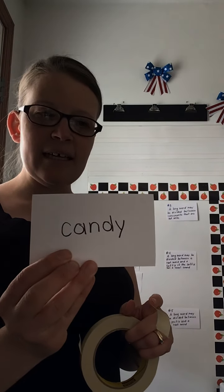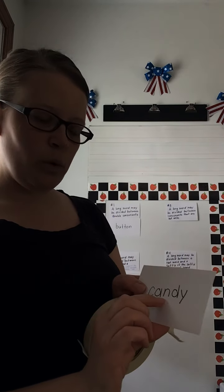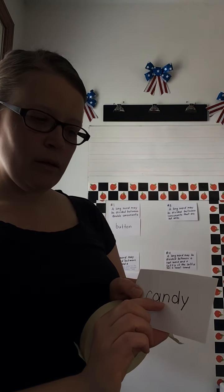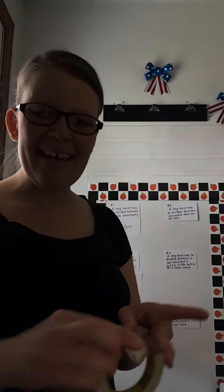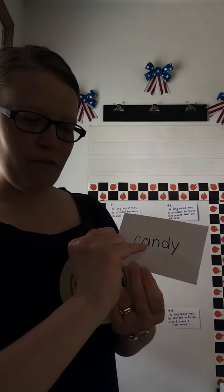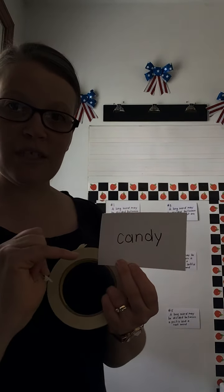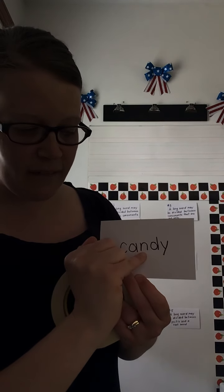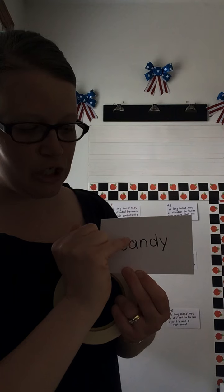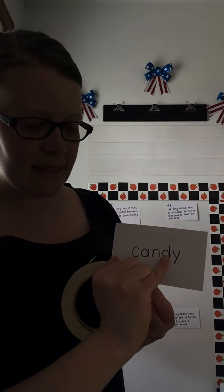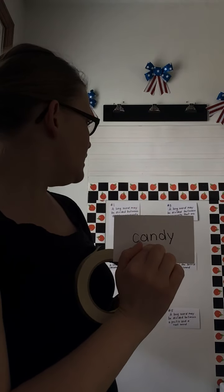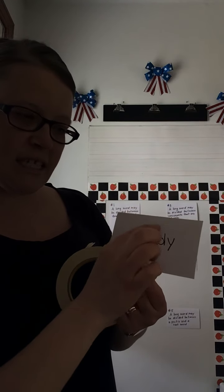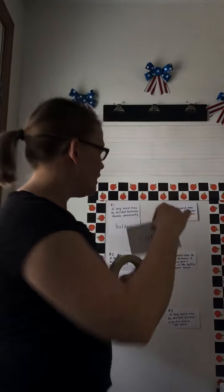The next word is 'candy.' Where does this one go? We would divide it between the two consonants — I misspoke earlier. It's actually important that you do not divide between the vowel and the consonant, because then the A would be long and it would be 'cā-ndy.' So we want to divide it between the two consonants that are not alike. That's rule three.